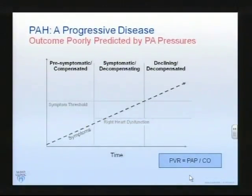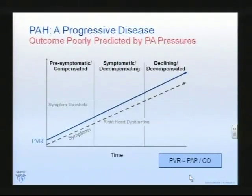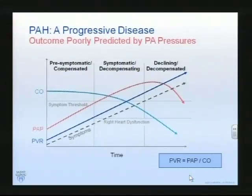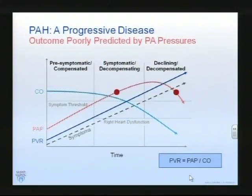If we look at PA pressures and break groups into pre-symptomatic and compensated, symptomatic and decompensating, and declining and decompensating - if we look at PVR, it reflects those groups relatively well. If we look at pulmonary artery pressure, there's a problem with the more severe instances. Looking at PAP, it's quite clear that you can have the same value in both the second and third categories. You can be symptomatic and decompensating, or actually be in the last stages of your natural history and still have the same pulmonary artery pressure.